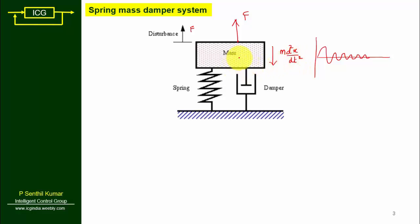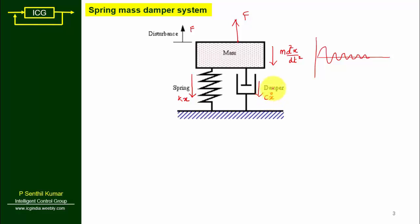Since we are applying force in the upward direction, the spring force will be opposite to the applied force — so spring force acts downward as kx. The damper is a friction element, and friction always acts opposite to the applied force, so the friction force is c·ẋ downward. The total forces acting on the system are: m·d²x/dt² downward, kx downward, c·ẋ downward, and F upward.